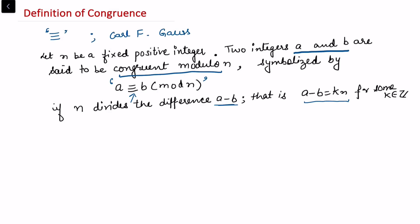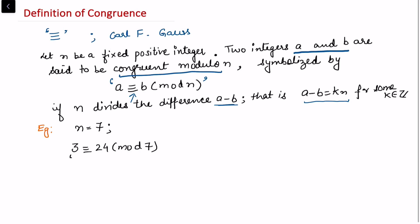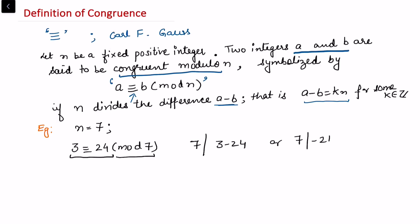Let's fix n equal to 7 and take an example: is 3 congruent to 24 modulo 7? To verify, we check whether 7 divides 3 minus 24, which is minus 21. Since 7 divides minus 21, this statement is true.